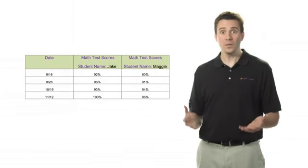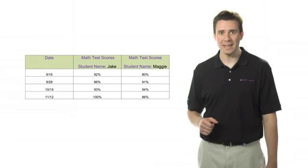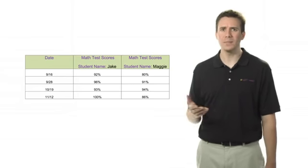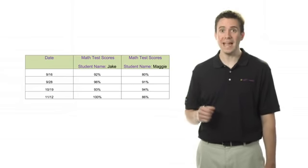With this additional data, what can you now conclude about Jake and Maggie? What may have caused Jake to have done so poorly at the beginning of the year and then become an A student?